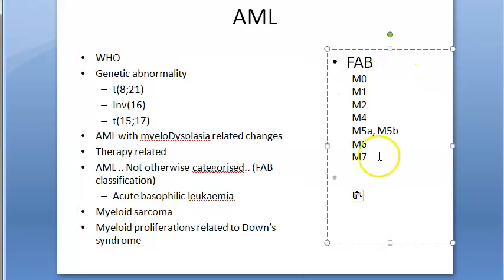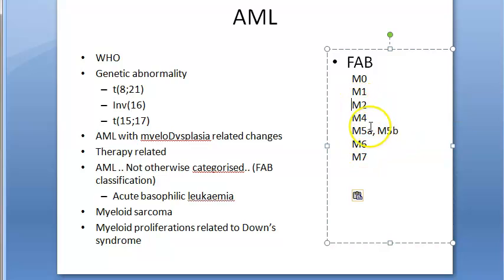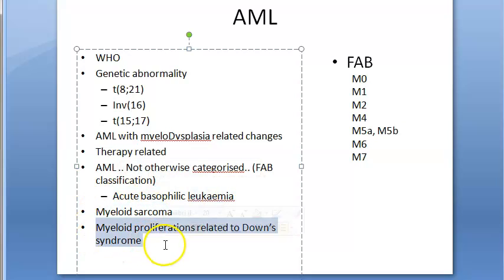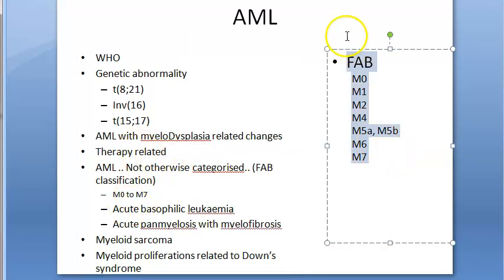The FAB classification includes M0, M1, M2, M4, M5A, M5B — note there is no M3 listed here but M5 has two subtypes — then M6 and M7. Additional categories include acute basophilic leukemia, myeloid sarcoma, and myeloid proliferations due to Down syndrome.